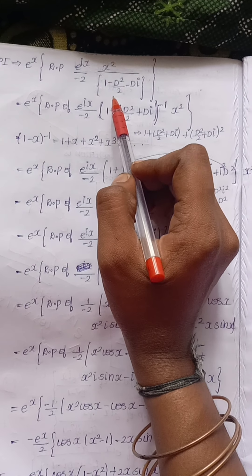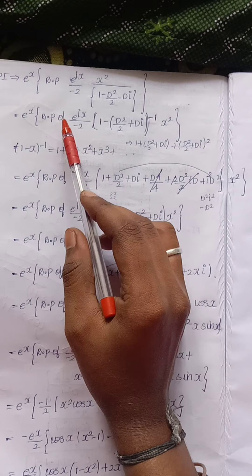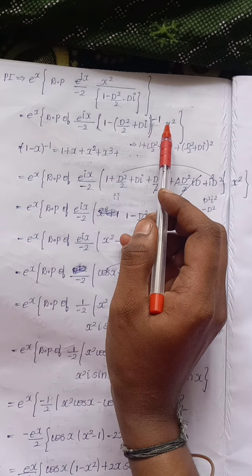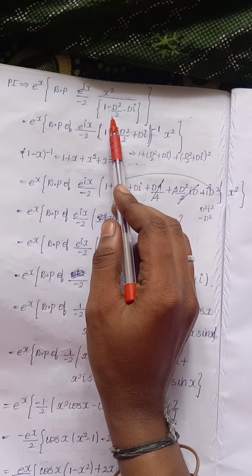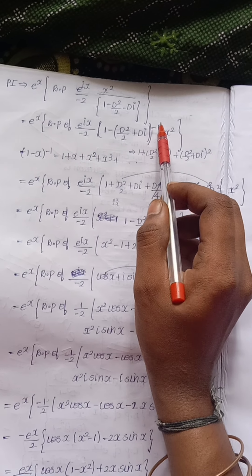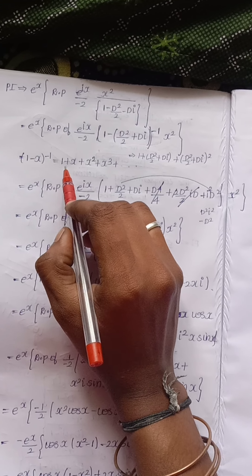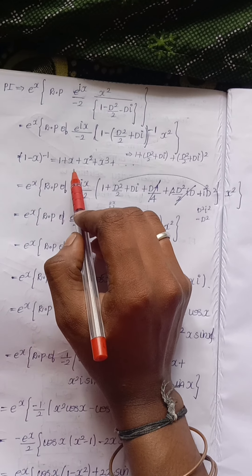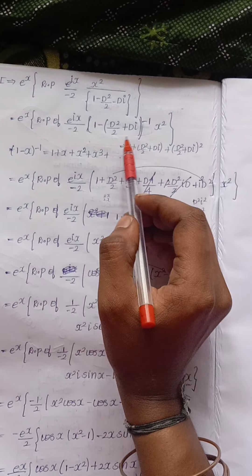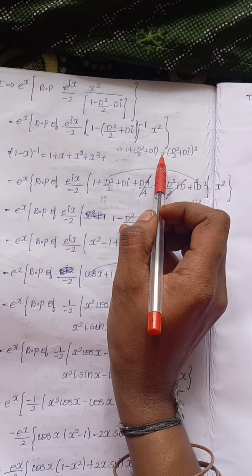Factoring minus 2 from the denominator, we get x² divided by minus 2 times (1 minus D²/2 minus Di). Moving the denominator to the numerator gives the factor (1 minus D²/2 minus Di)^(minus 1). Using the binomial expansion (1 minus t)^(minus 1) equals 1 plus t plus t² plus ..., we substitute t equals D²/2 plus Di, giving 1 plus (D²/2 + Di) plus (D²/2 + Di)² and so on.